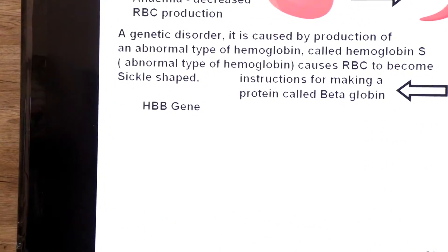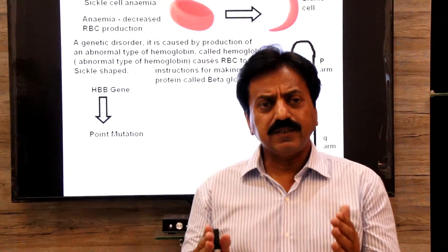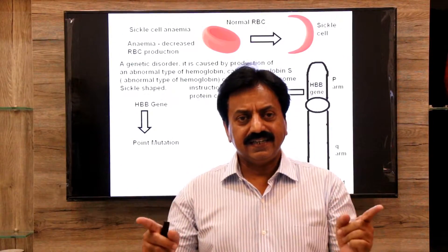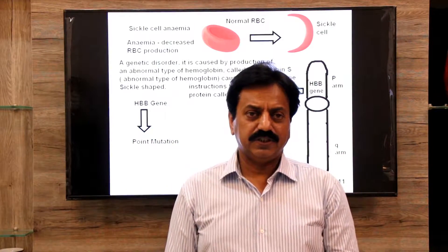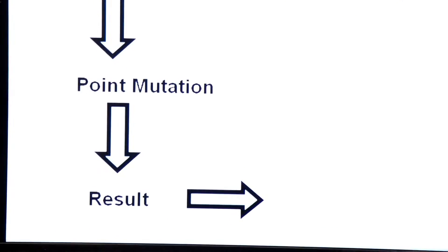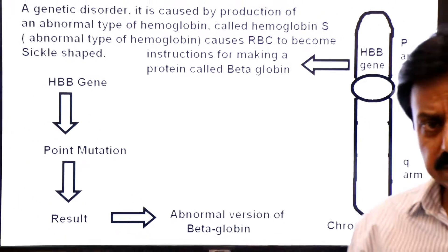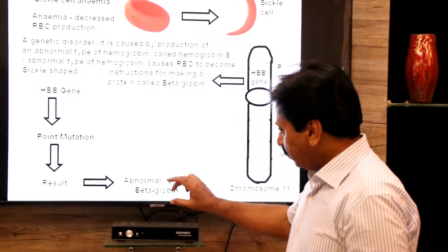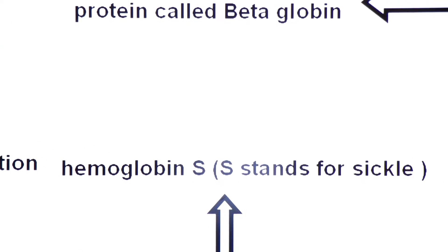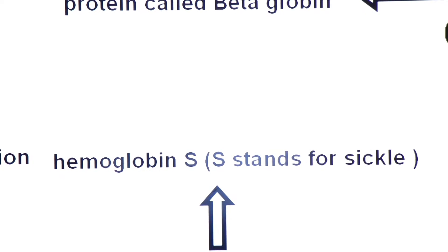What is the function of the HBB gene? This hemoglobin beta gene gives instructions for making a protein called beta globin. Your hemoglobin contains two alpha chains and two beta chains; the HBB gene codes for the beta chain. This HBB gene undergoes a point mutation, which produces an abnormal variant of beta globin. That abnormal variant is called hemoglobin S, where S stands for sickle cell anemia.